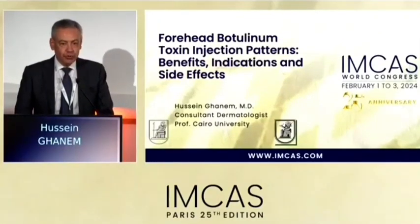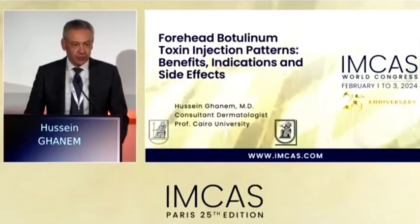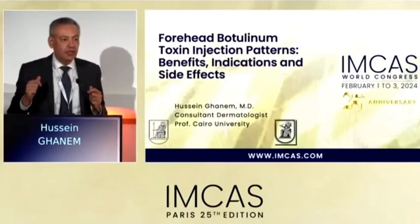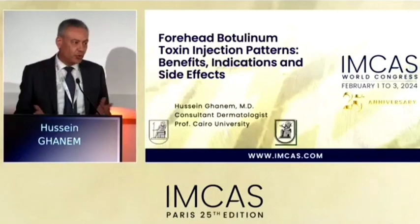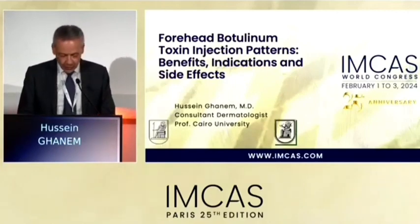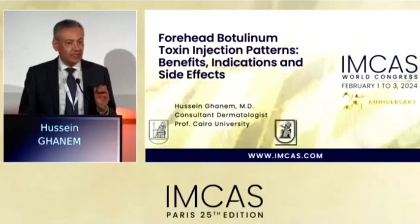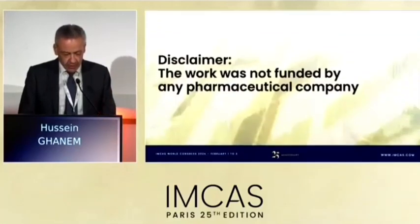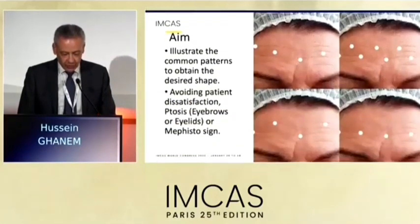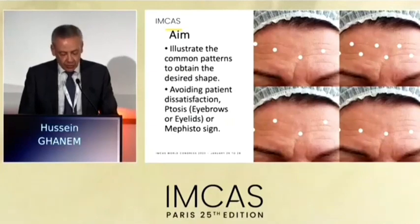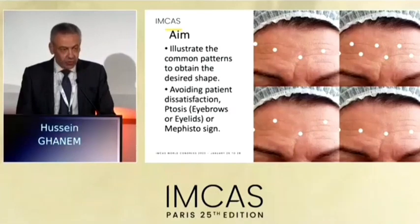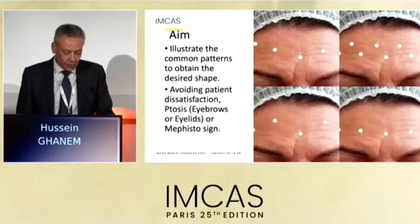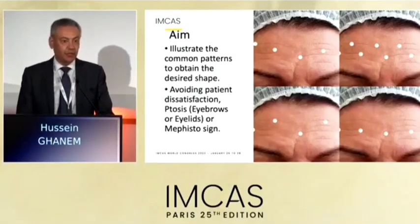What's the pattern that we use to inject botulinum toxin? Is it a straight line across the forehead? Is it a V-shaped pattern? Is it an M-shaped pattern? I'm going to discuss that and we can see what would work best for each case. There is no conflict of interest related to this presentation. I aim to illustrate the common patterns to obtain the desired brow shape, and how to avoid patient dissatisfaction due to adverse events like a Mephistos sign or drooping of the eyebrows.